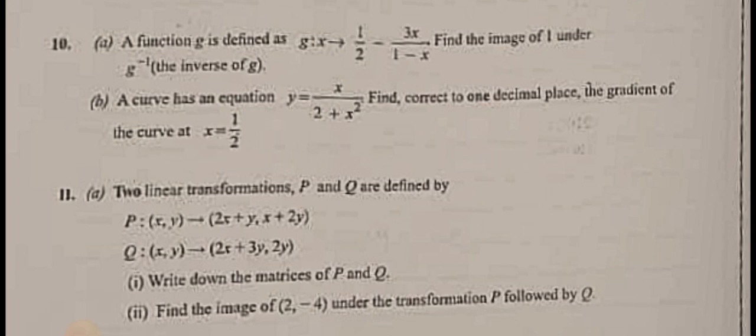B, a curve has an equation y equals x over 2 plus x squared. Find correct to 1 decimal place the gradient of the curve at x equals 1 over 2.